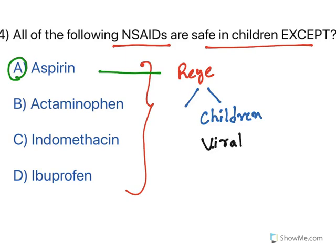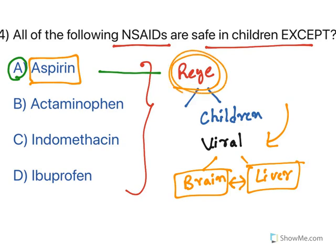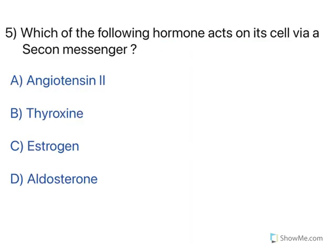In Reye's syndrome, the main affected tissues are brain and liver — it causes encephalitis (inflammation of the brain) and liver damage. This condition is aggravated when children take aspirin. So if they take aspirin for the severe headache caused by viral infection, both brain damage and liver damage are aggravated. Remember: children less than 18 years old should not take aspirin. All NSAIDs can be taken except aspirin.